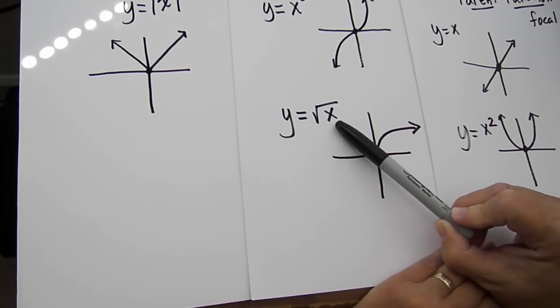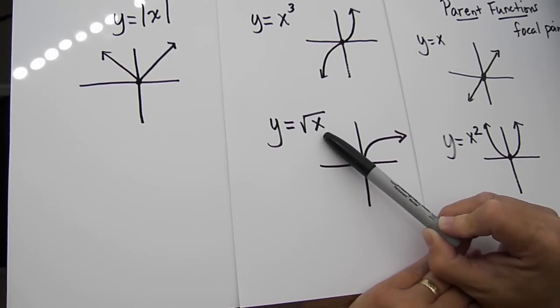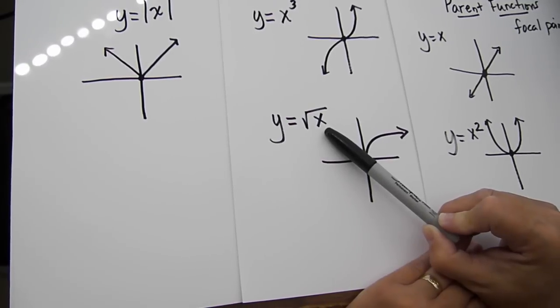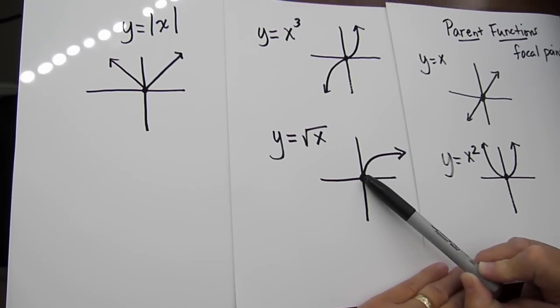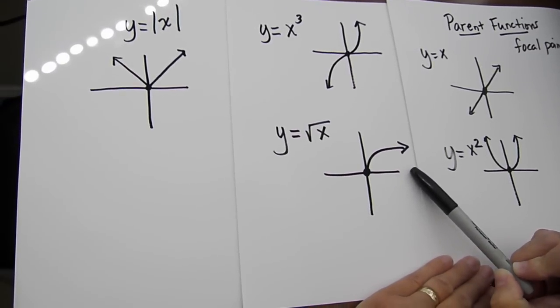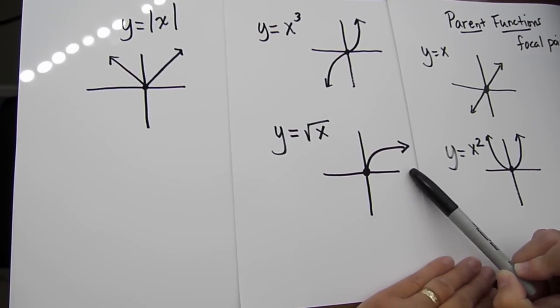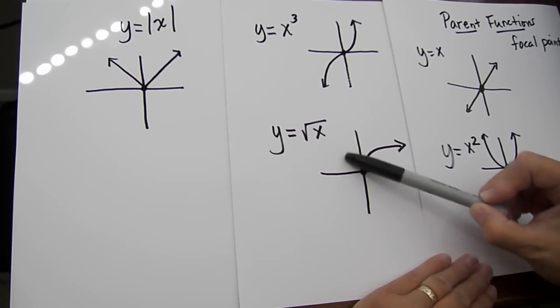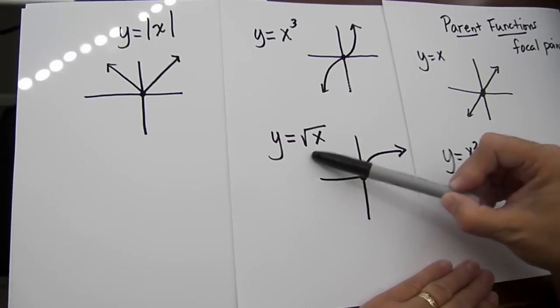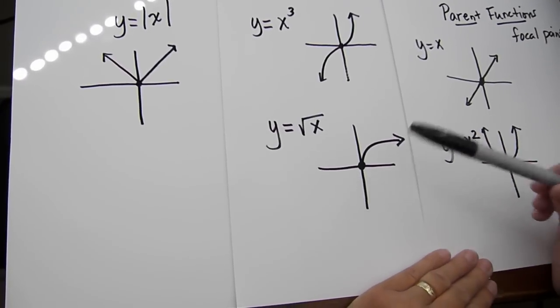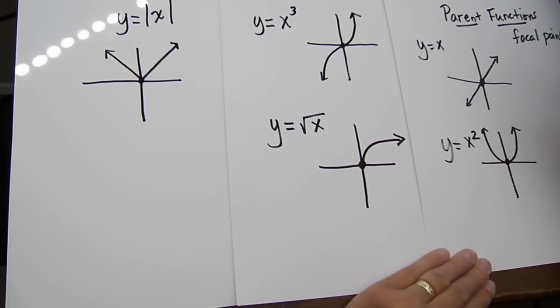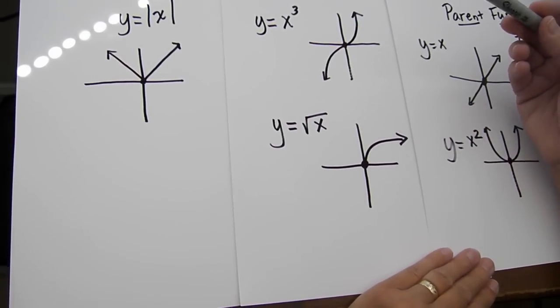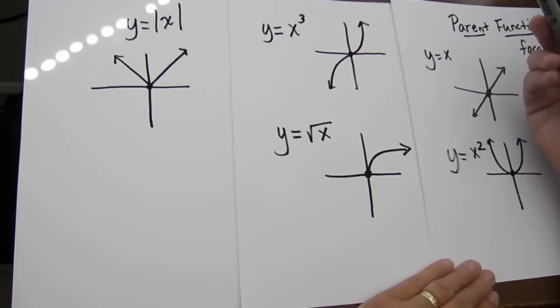But the problem with the square root of X, it has a domain restriction, because we can't take the square root of negative numbers. So therefore, we can only use values that are greater than 0 or equal to 0 to take the square root of. So these parts over here are not used for X. Negative X values are not in the domain. So even though these four graphs all have a domain of all real numbers, the square root of X only has a domain of X is greater than or equal to 0.